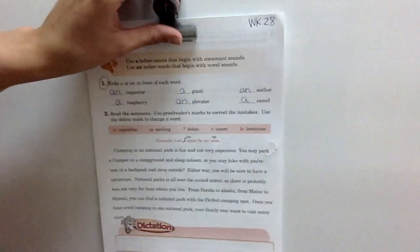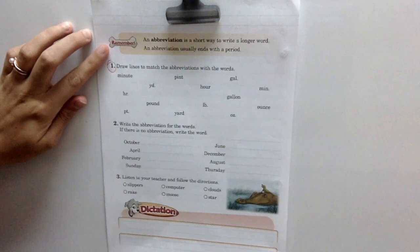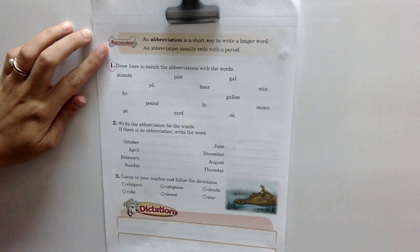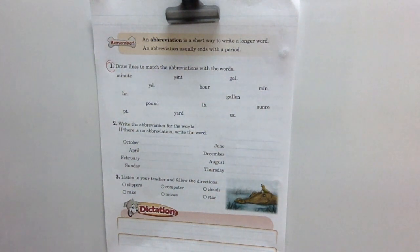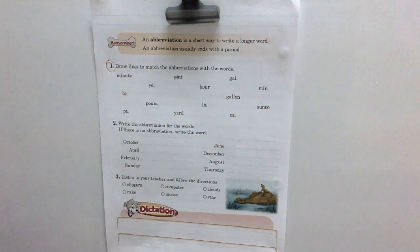Alright, we're moving on to page 271. We're going to be looking at some abbreviations here. Now we remember right here by this little bone it says an abbreviation is a short way to write a longer word. An abbreviation usually ends with a period. So number one asks us to draw lines to match the abbreviations with the word. So we're going to be drawing some squiggly lines. I hope you're paying attention because these lines are going to look a little crazy in just a minute.